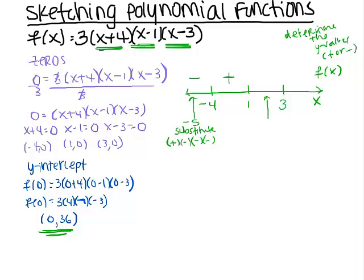Let's try the interval between 1 and 3 — let's pick 2. We have a positive sign for 3. 2 plus 4 is positive, 2 minus 1 is positive, 2 minus 3 is negative. So I have 3 positives times a negative, which gives me a negative. One last time, let's plug in a number greater than 3 — let's try 4. We have positive for 3, 4 plus 4 is positive, 4 minus 1 is positive, and 4 minus 3 is positive. Four positive numbers multiplied together gives me a positive.